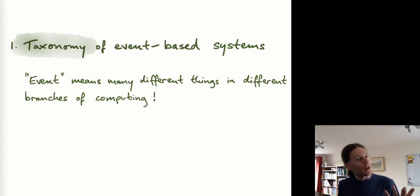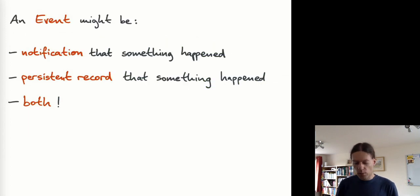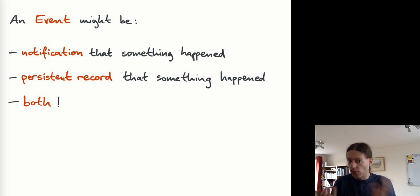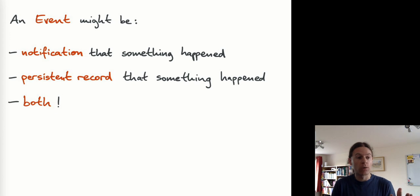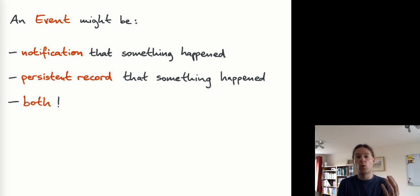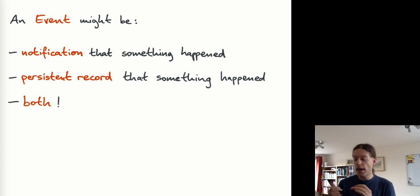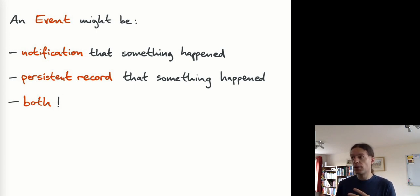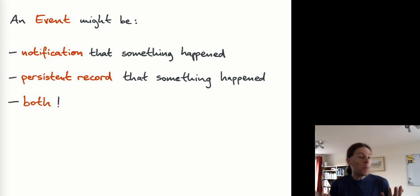When I think about events, the first question I want to ask is: what exactly do we mean with the different aspects of what an event could be? An event could be first of all a notification of the fact that something happened — a piece of code, some function gets called as a result of something occurring. Also an event could be a persistent record of the fact that something happened, written to disk so we can retrieve it again later. Or it could be both — a notification and the record at the same time.